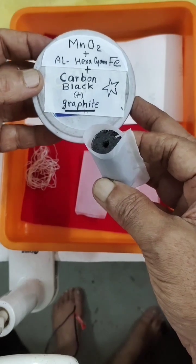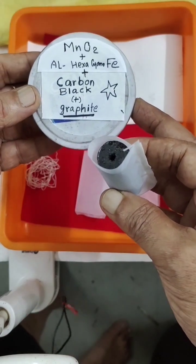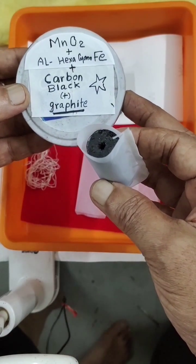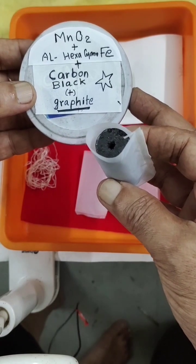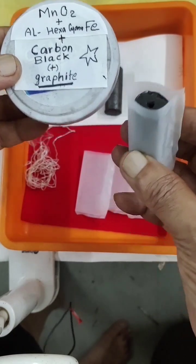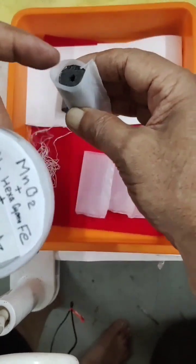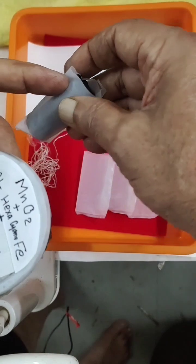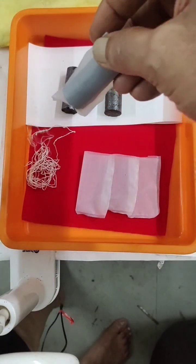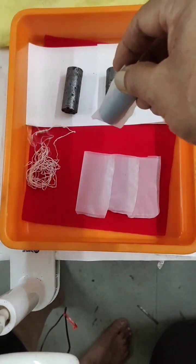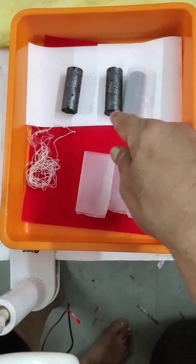This time what I am going to use is MnO2 plus those previous I had done, now aluminum hexacyanoferrate complex I got, the carbon black plus graphite, equal mixture, equal ratios. So this powder I am going to place inside this. Here there will be positive wire, red wire, then I'll tie the upper side so that this powder will not come outside.